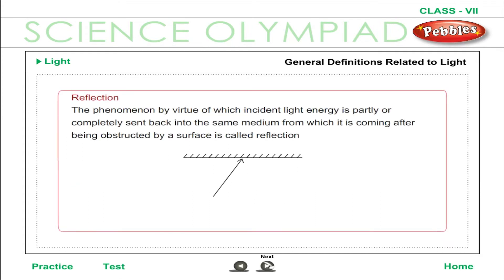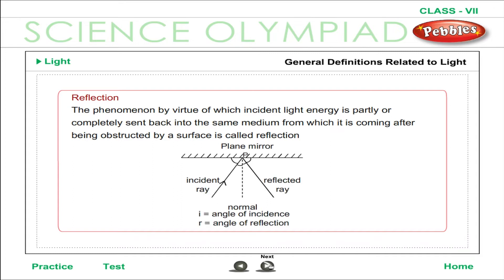Reflection: the phenomenon by virtue of which incident light energy is partly or completely sent back into the same medium from which it is coming, after being obstructed by a surface, is called reflection.